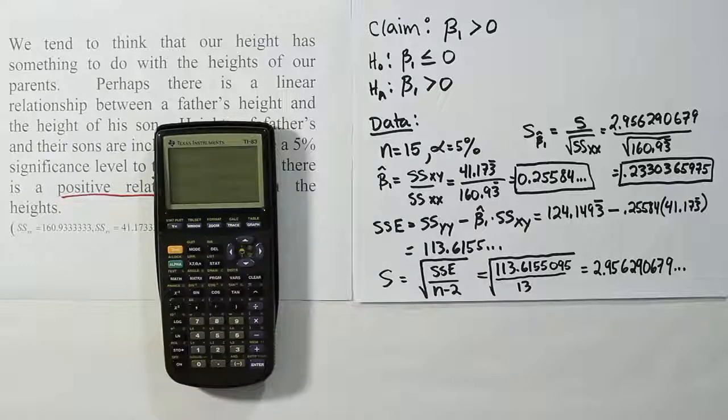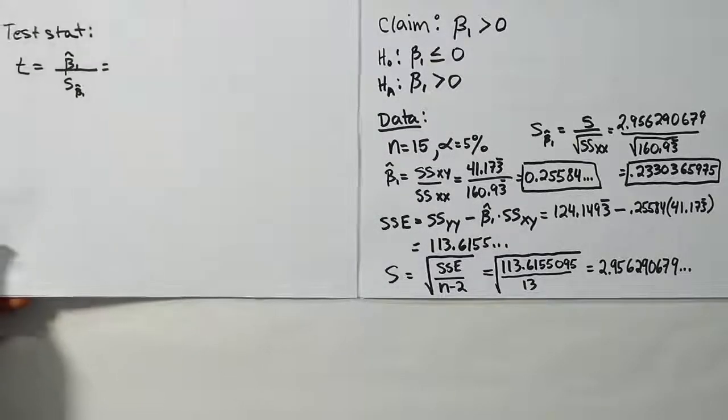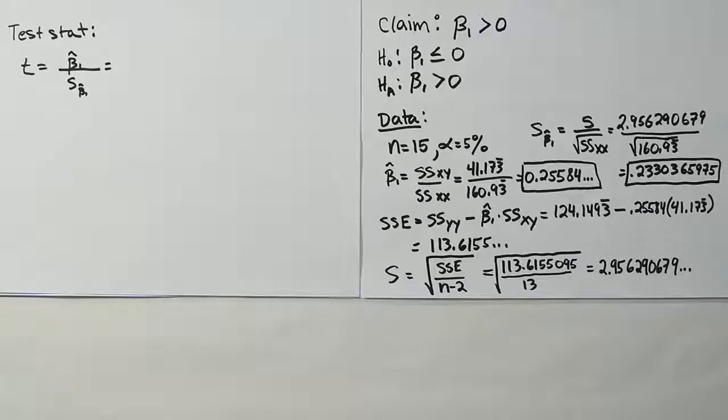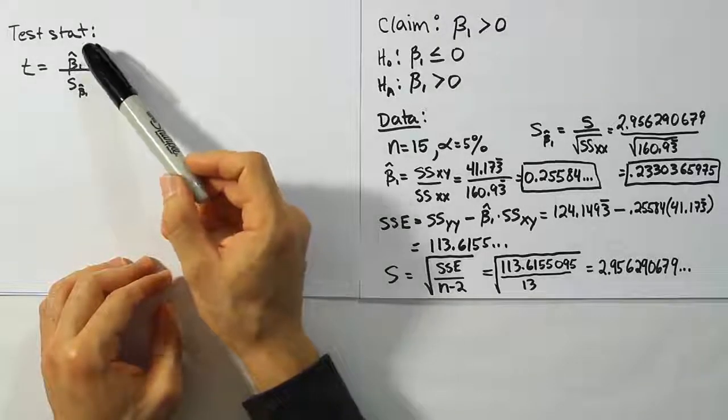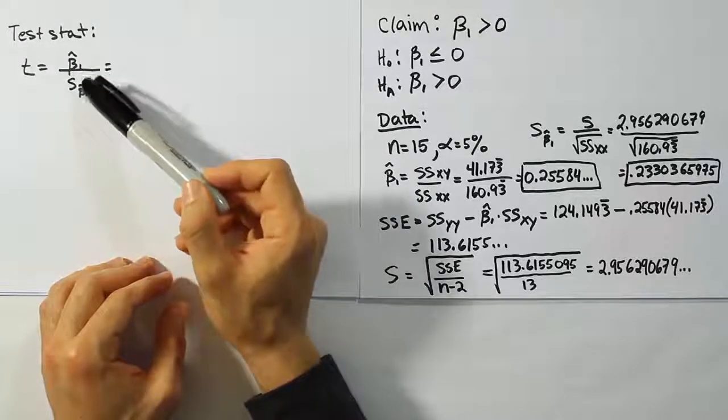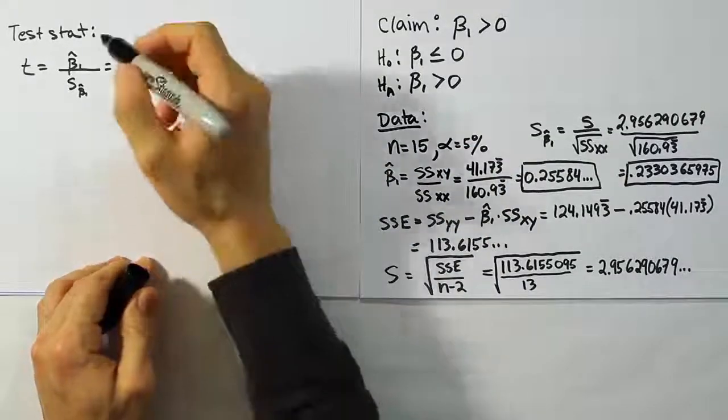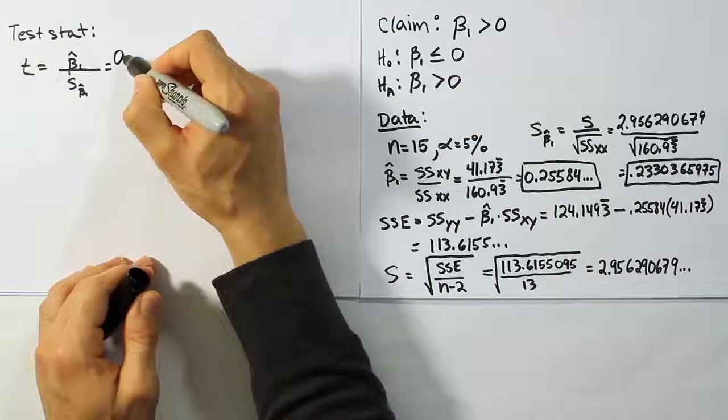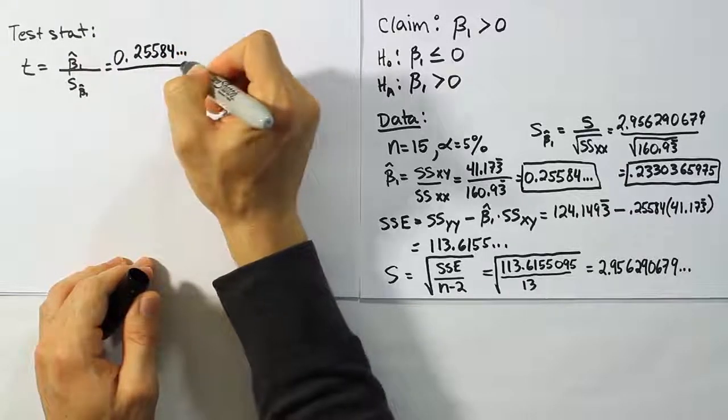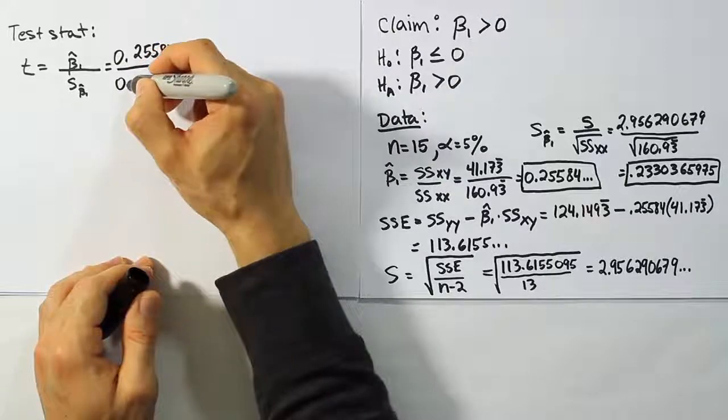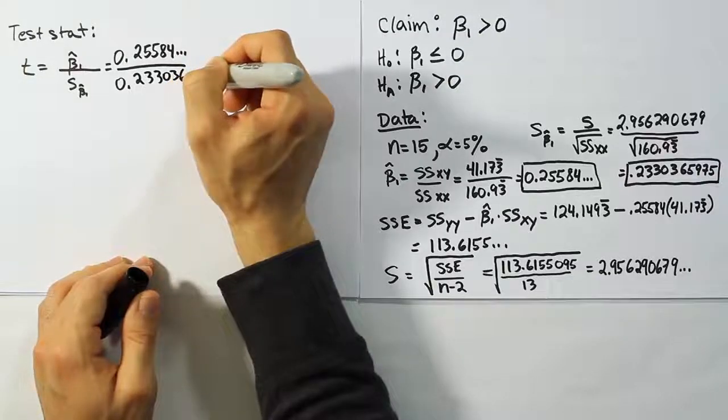Okay, so let's get a new sheet of paper out and do our test statistic next. Okay, so now that we've finished our data, it's time to calculate our test stat. It's a very easy formula to calculate the test stat. We're just going to do a t statistic, and it's very simple. We take the point estimator for the slope, so beta 1 hat, divided by its standard error, S for beta 1 hat. And we just calculated those two values. It's the values I've put in the boxes over there. So we're actually in really good shape to do this test stat, and it's really going to be simple. So it's 0.25584 dot dot dot divided by the S value that we came up with, which was 0.233036 dot dot dot.